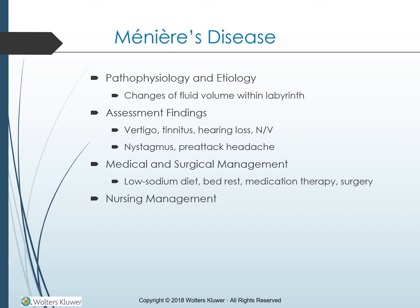Assessment findings: Onset of Meniere's disease may be sudden and symptoms may occur daily or infrequently. Vertigo is the most incapacitating symptom; clients report whirling dizziness and the need to lie down, and severe vertigo causes nausea and vomiting. Clients also typically experience tinnitus, hearing loss lasting several hours, headaches, and abdominal discomfort. Nystagmus of the eyes may result from an imbalance in vestibular control of eye movement. Hearing returns between attacks but gradually becomes worse with repeated attacks. An attack lasts from a few minutes to weeks. Some clients are reluctant to leave their homes for fear of having an attack in public.